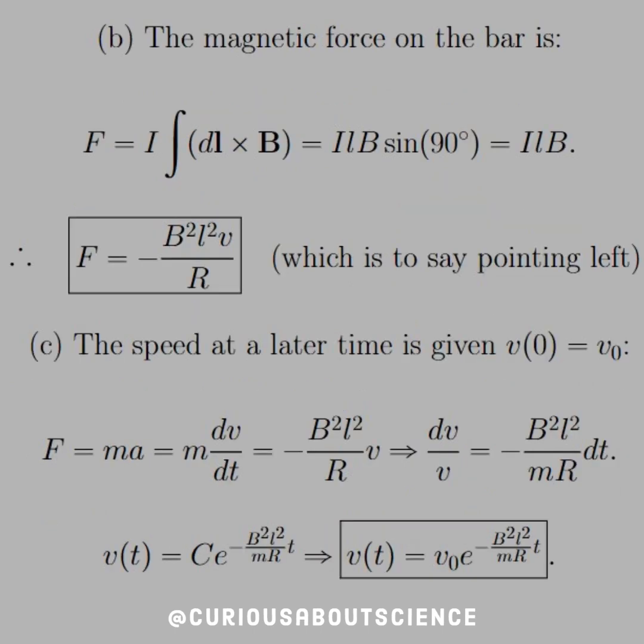So B, the magnetic force on the bar is, well, we know the force law is F equal I integral of dL cross B. But since the L and the B are acting at 90 degrees, that's just ILB. But we just found what I was, so we can substitute it in, and we see that F is equal to negative B squared L squared V over R, which we'll definitely see this again, by the way. But this again just tells us that we're pointing to the left.